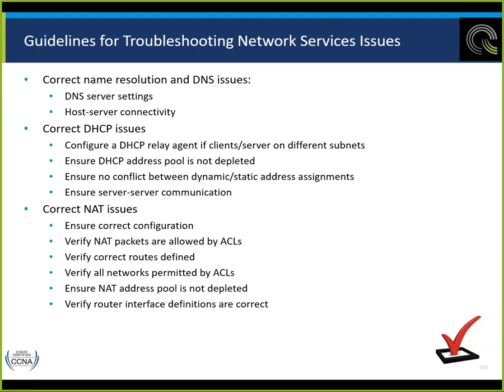NAT issues: correct configuration — interfaces labeled correctly as NAT inside and NAT outside. Correct routes identified. Access control list is correct so users that should get NATed addresses do get them. All networks are permitted by the ACL. NAT address pool is not depleted — use the overload command so that if we run out of NAT addresses we automatically go to PAT (port address translation), allowing one address with multiple mappings.